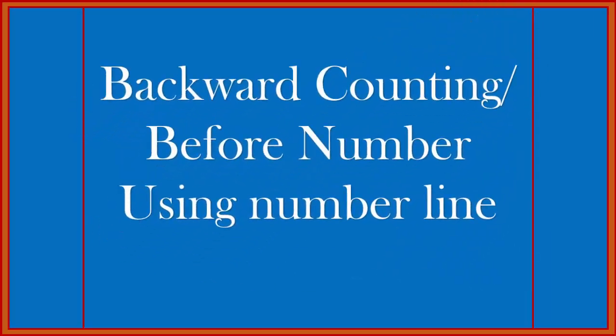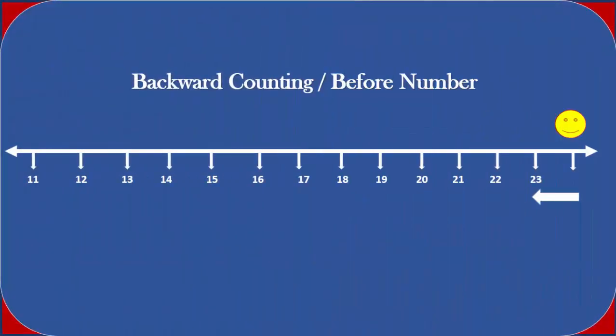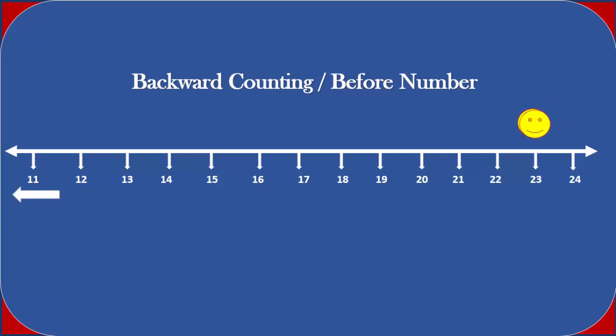Backward counting, or 'before' numbers, using a number line. In backward counting or before numbers, we have to go on the left side of the number line. Now the smiley face is on number twenty-four. When we go backward or before, the smiley face will come on number twenty-three, then twenty-two, then twenty-one.